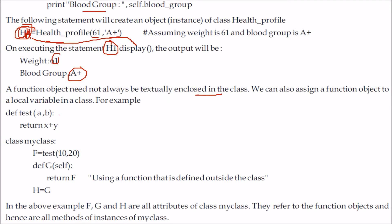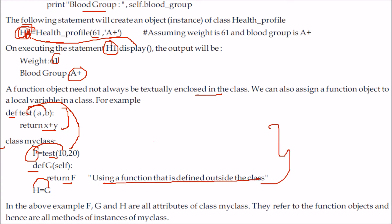We can also assign a function object to a local variable in the class. For example, we define a function `test(a, b)` that returns x plus y outside the class. Inside the class, we call `f = test(10, 20)` which gives 30, define a method `g(self)` that returns f, and then assign g to h. So f, g, and h are all attributes of MyClass, referring to function objects, and hence all become methods of the instance of MyClass.